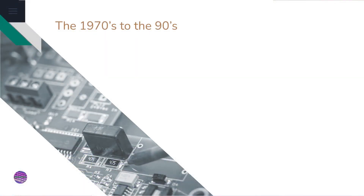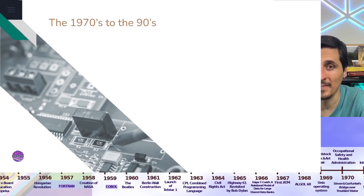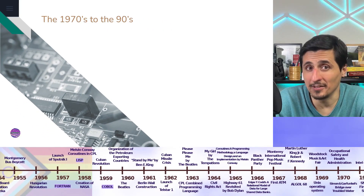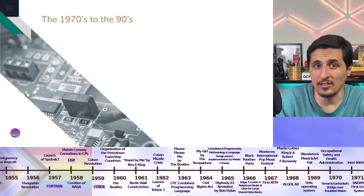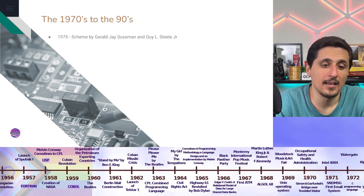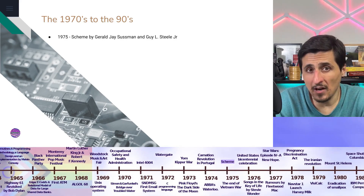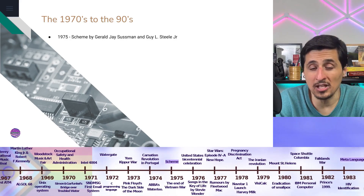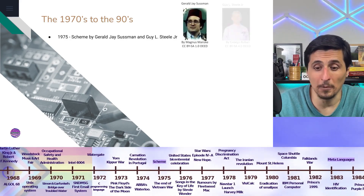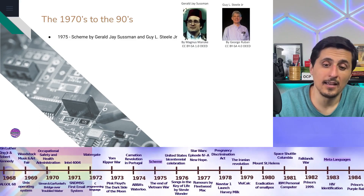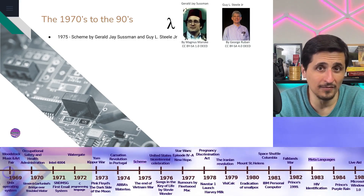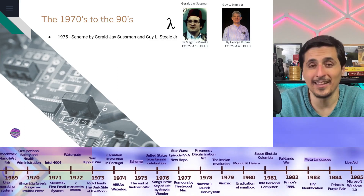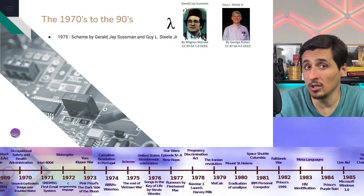In the 1960s, nothing too much happened in regards to recursivity — at least nothing too relevant. It was only in the 1970s that things changed. In 1975, Scheme was invented by Gerald J. Sussman and Guy Steele Jr. Scheme, a variation of Lisp, included a very important functionality: TCO — tail call optimization.